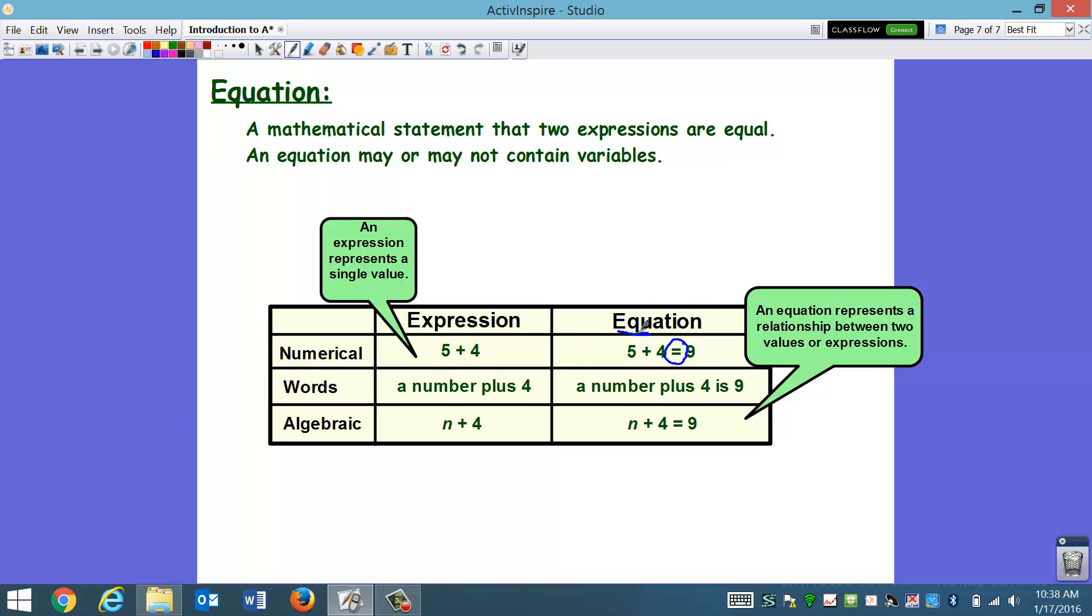And that's the main difference between an expression and equation is that the equation has the equal sign. And if you look at the word equation, it kind of starts with equal. So an expression will represent a single value, 5 plus 4. But an equation represents a relationship between two values or two expressions. So in this equation, it's telling us that 5 plus 4, that relationship to 9 is that they are equal. You could also have expressions or equations in words. A number plus 4. Well, a number, we don't know that number. So we can write this as an algebraic expression and use n as our variable for the unknown number. So n plus 4. That is your expression. A number plus 4 is 9. Is is our clue word that this means equals. So n plus 4 equals 9 would be our equation. And that's it for these notes.